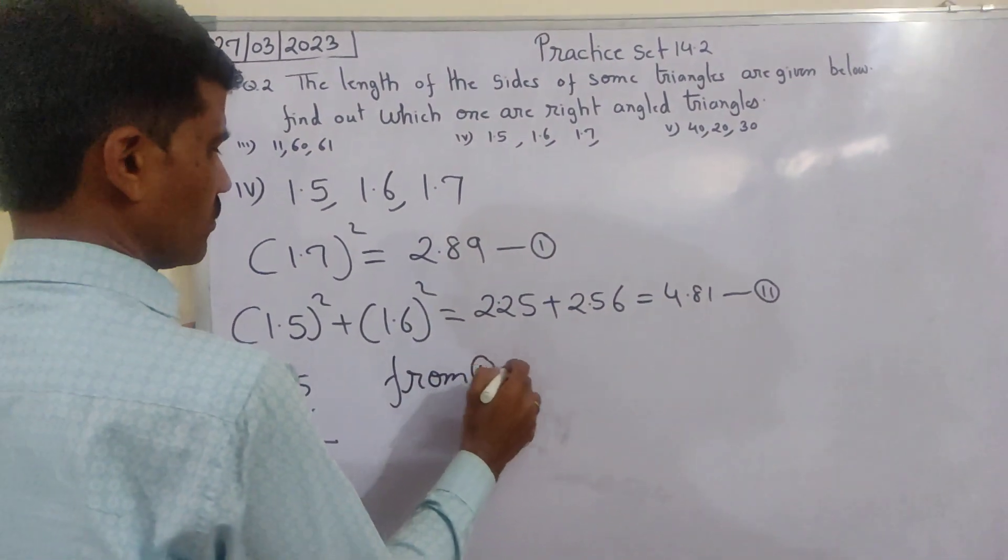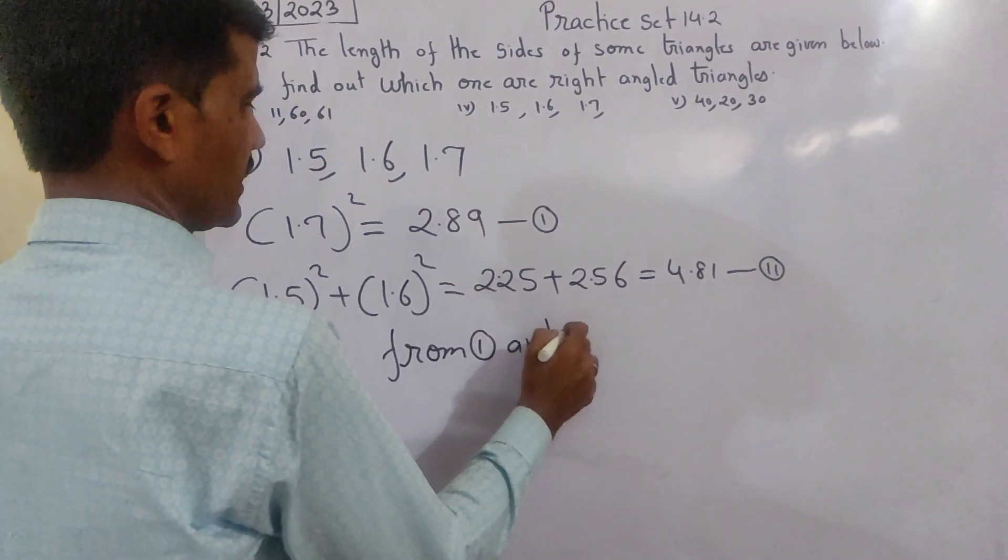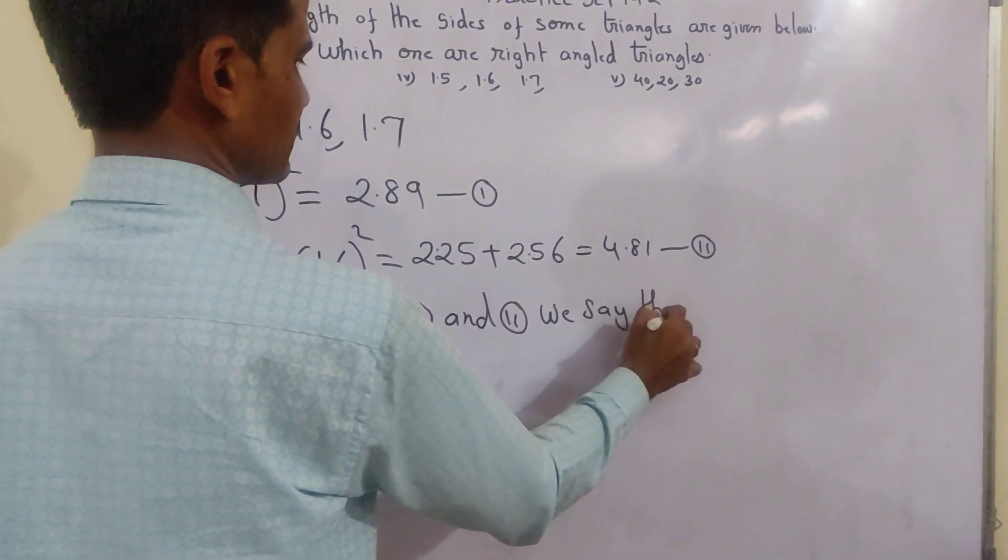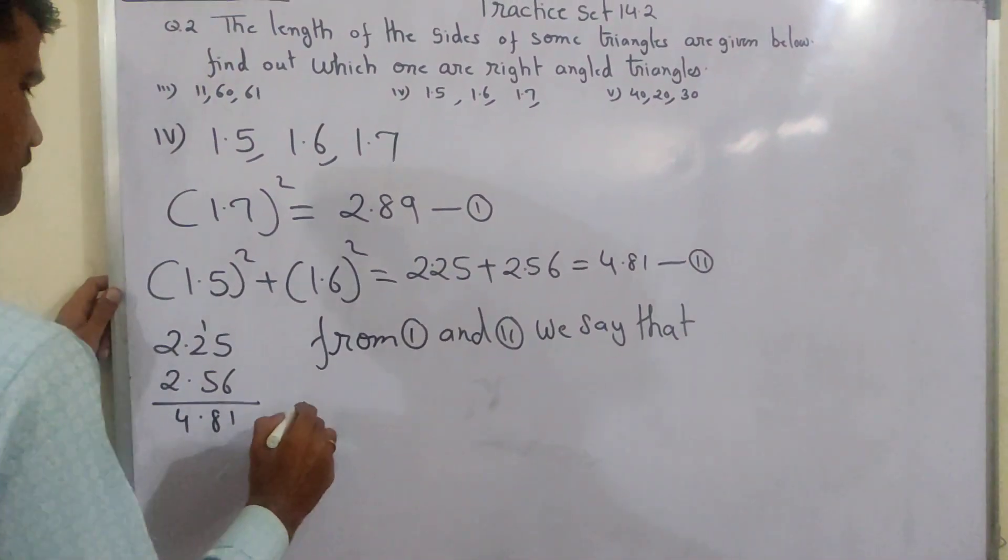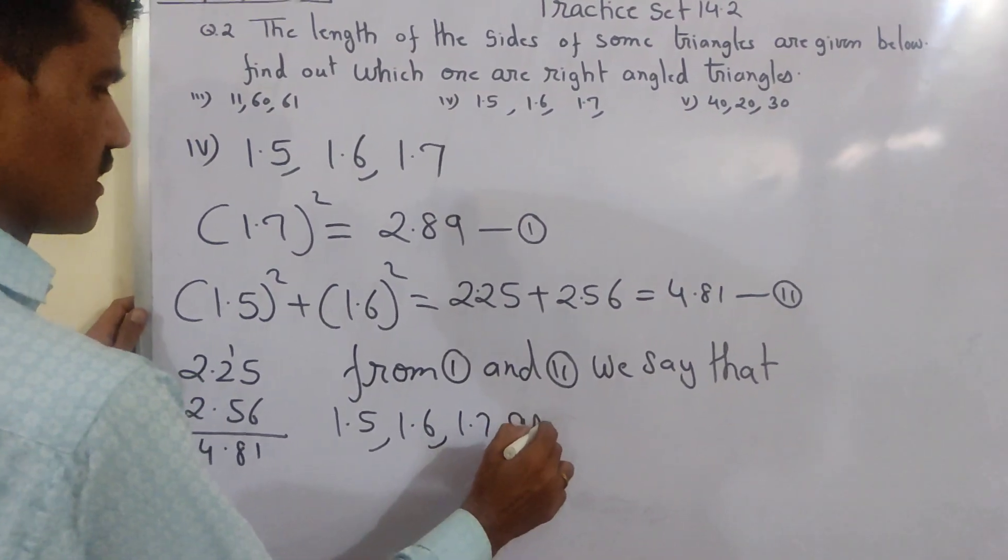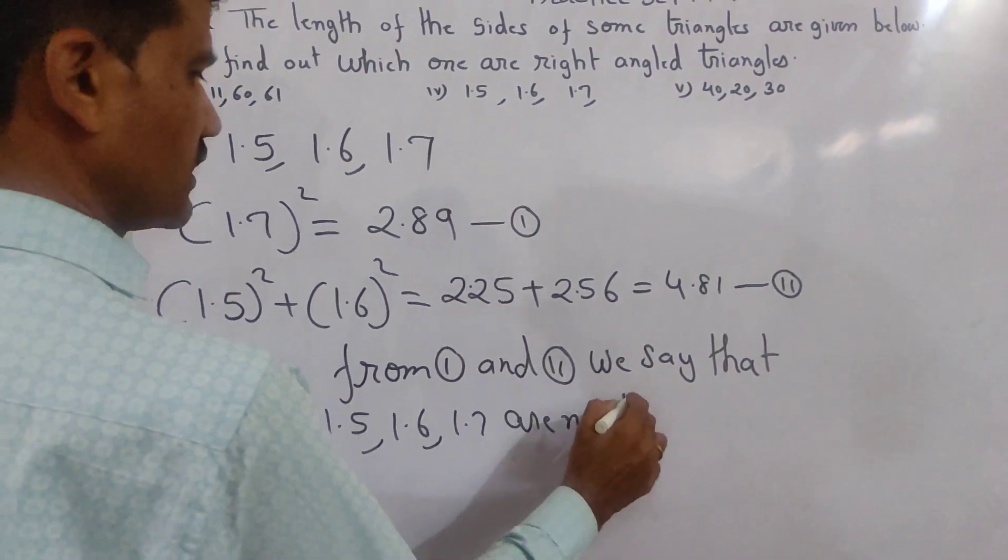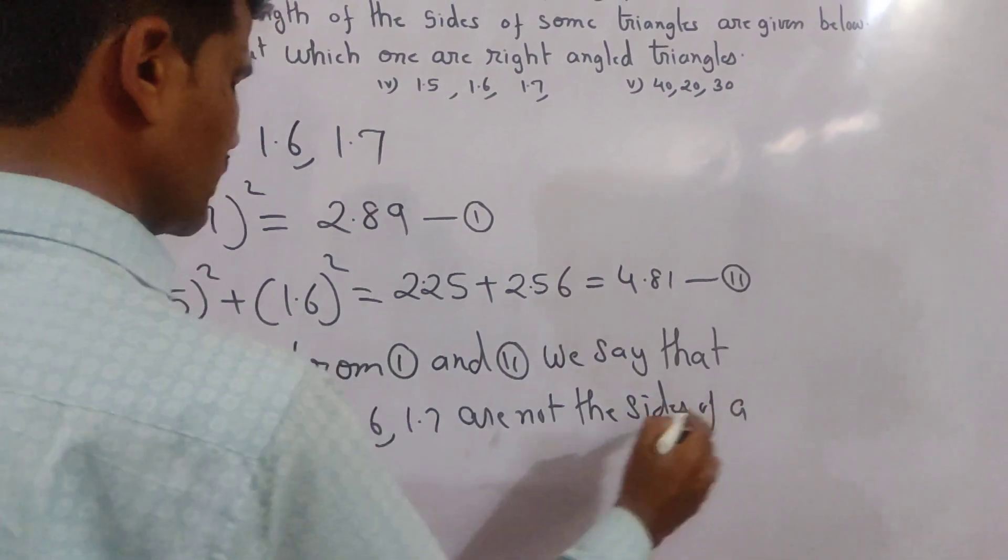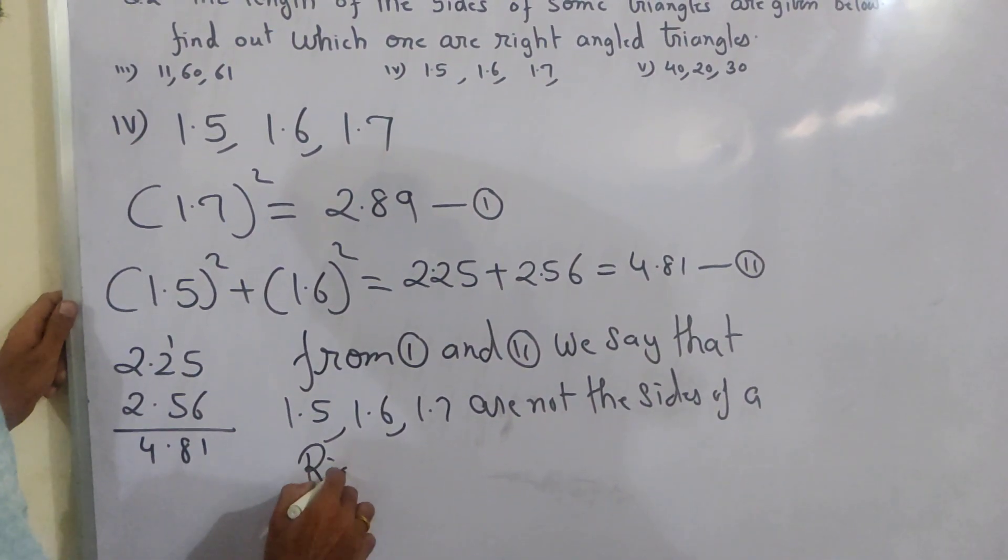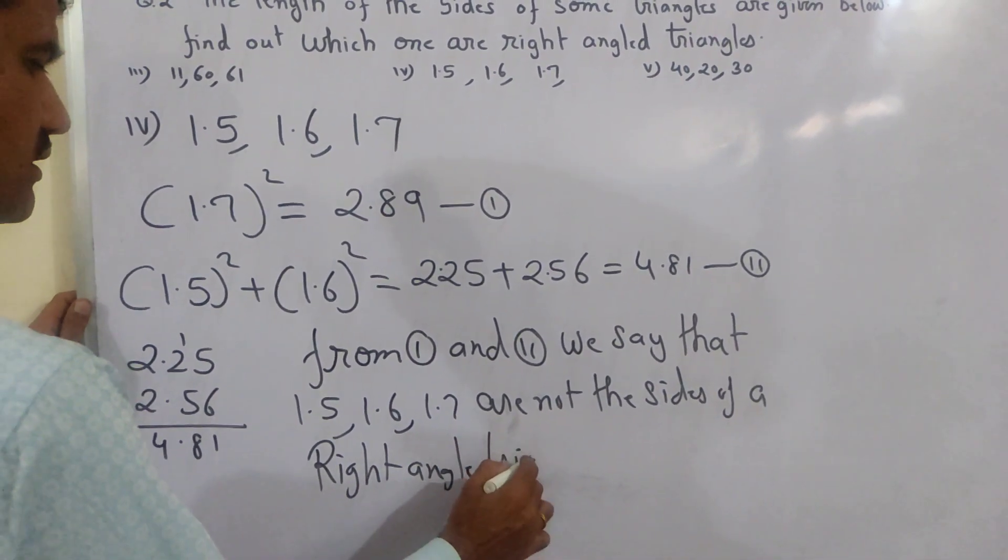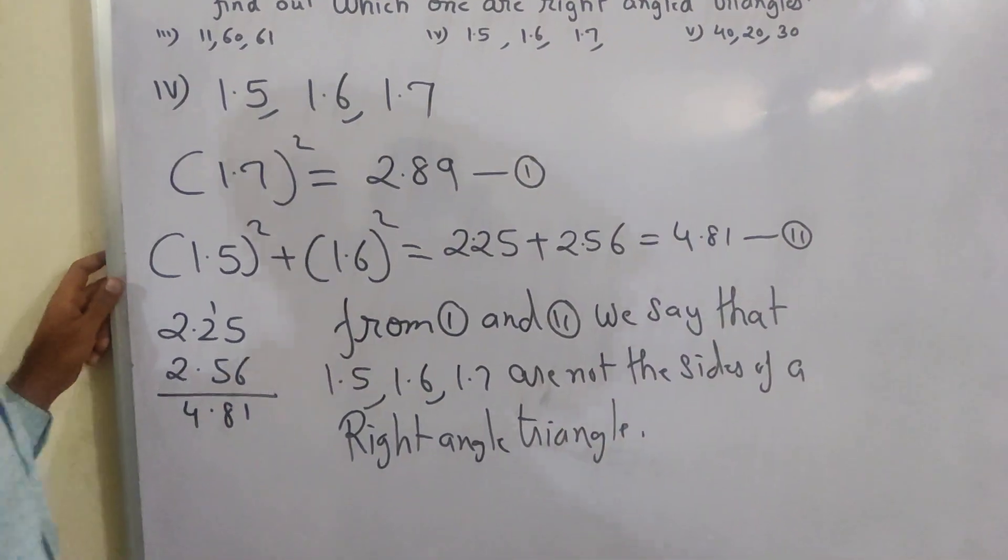Kya diya hai - here number 2. Observe karo - same nahi hai. From 1 and 2, we say that 1.5, 1.6, 1.7 are not the sides of a right angle triangle. Complete ho gaya hai, mark spot hone ko koi chance nahi hai.